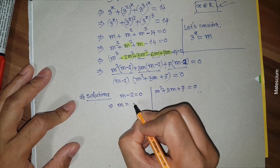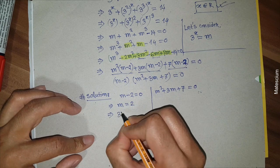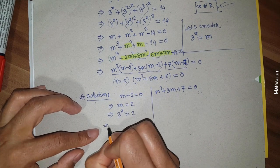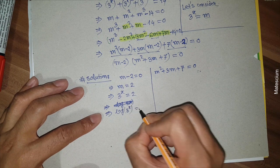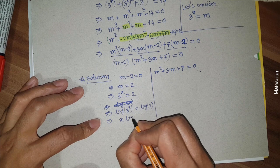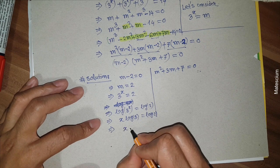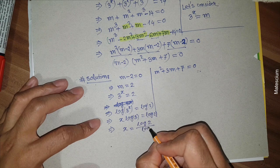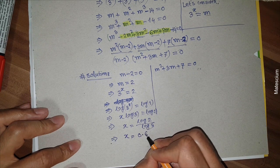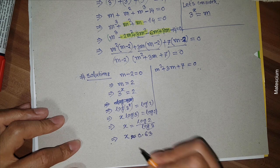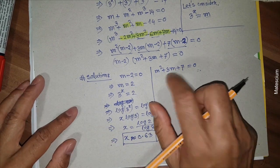The first possible solution is m minus 2 equals 0, giving m equals 2. Since m is not our final answer, I replace m with 3 to the power x: 3 to the power x equals 2. Taking the log of both sides: x times log 3 equals log 2, so x equals log 2 divided by log 3. Using a calculator, x is approximately 0.63.